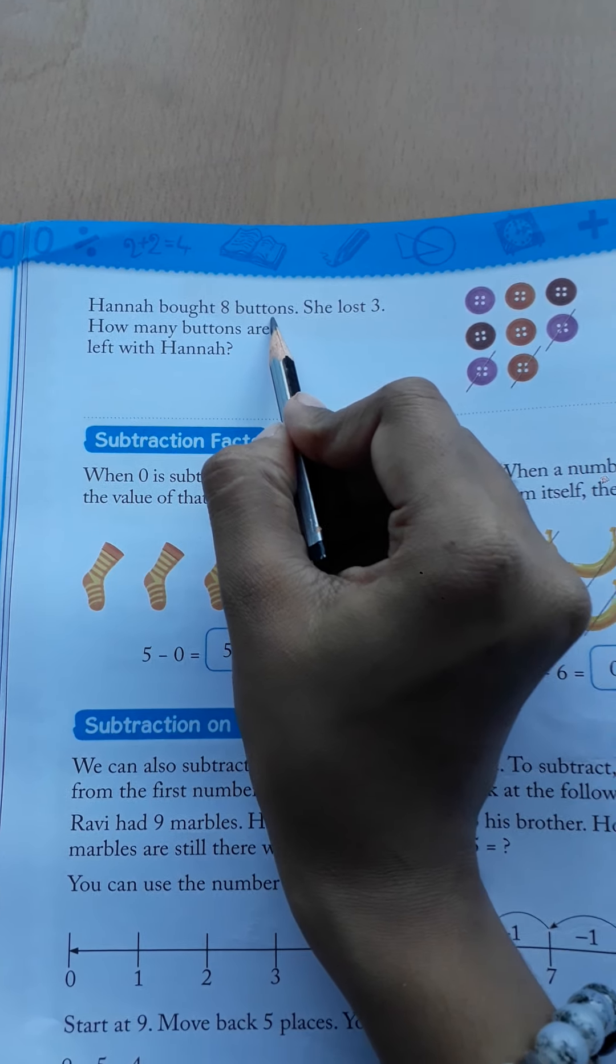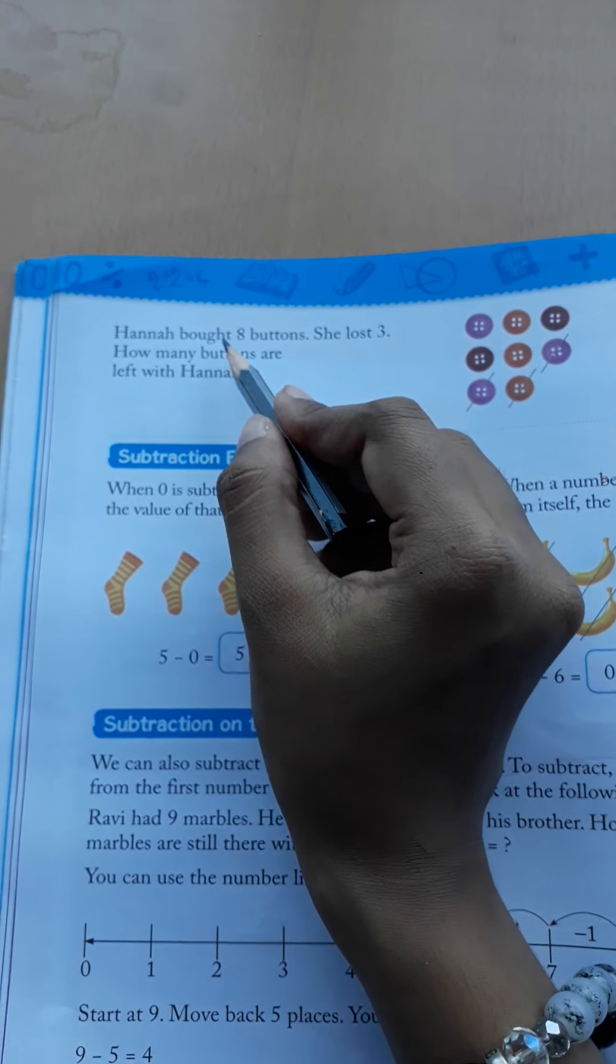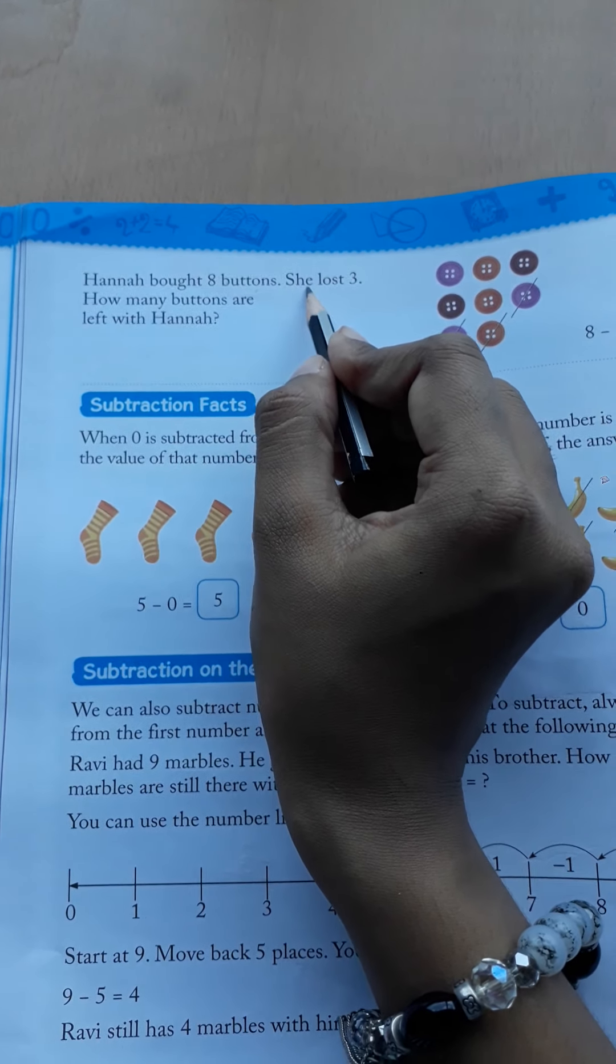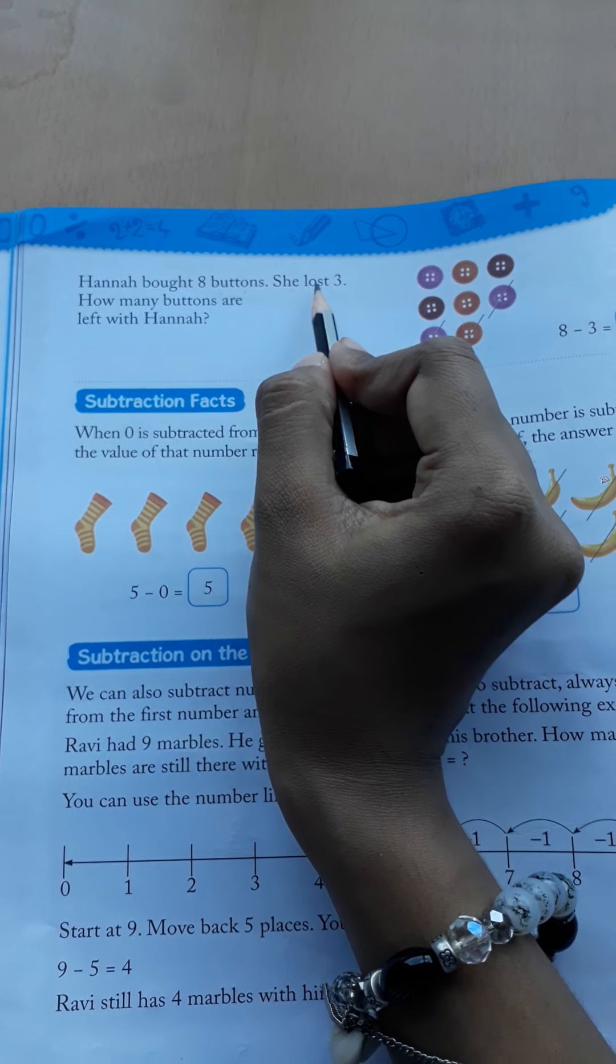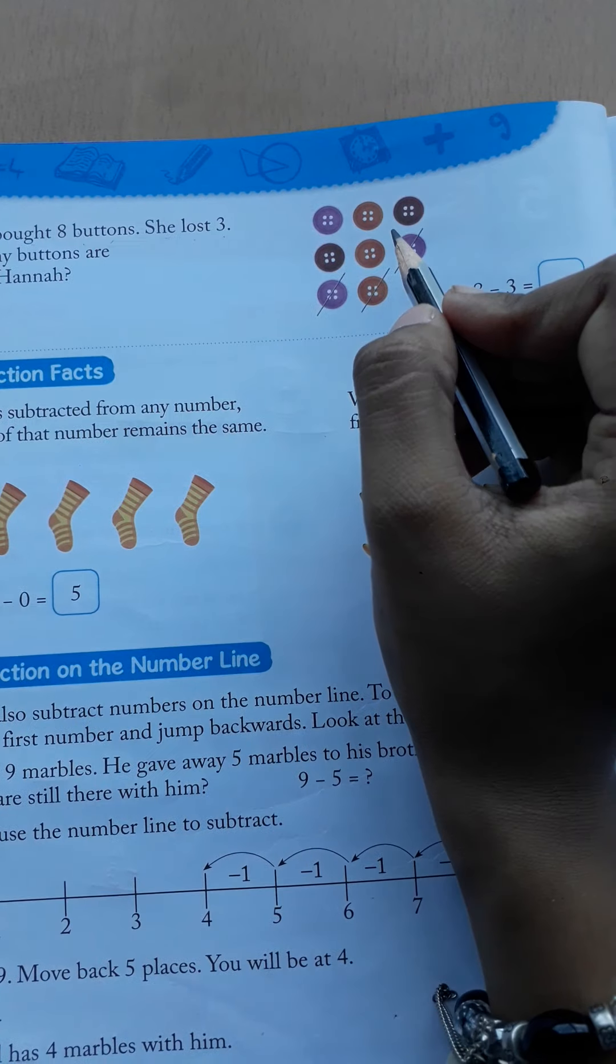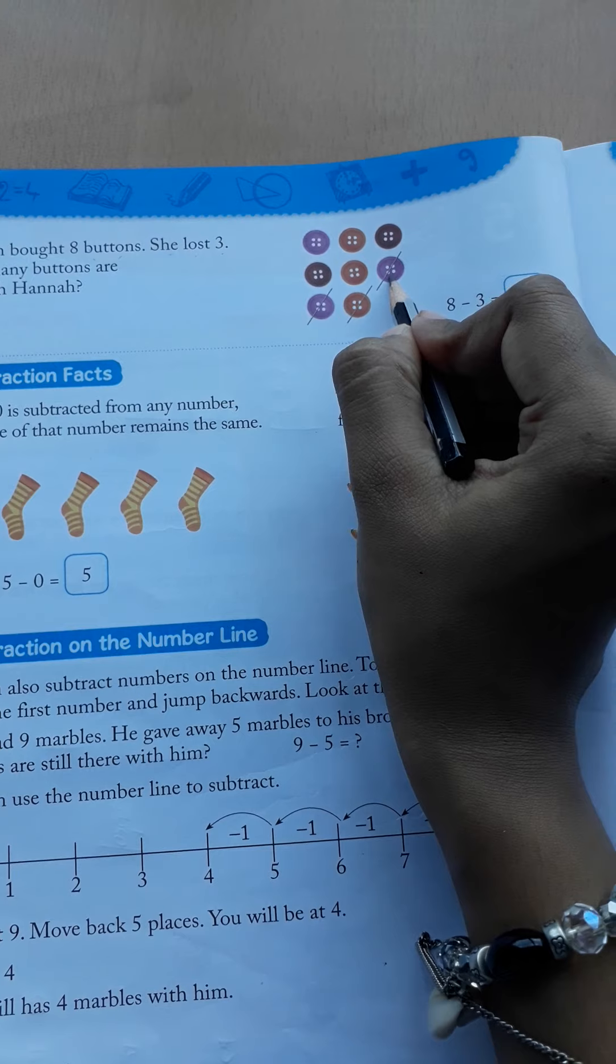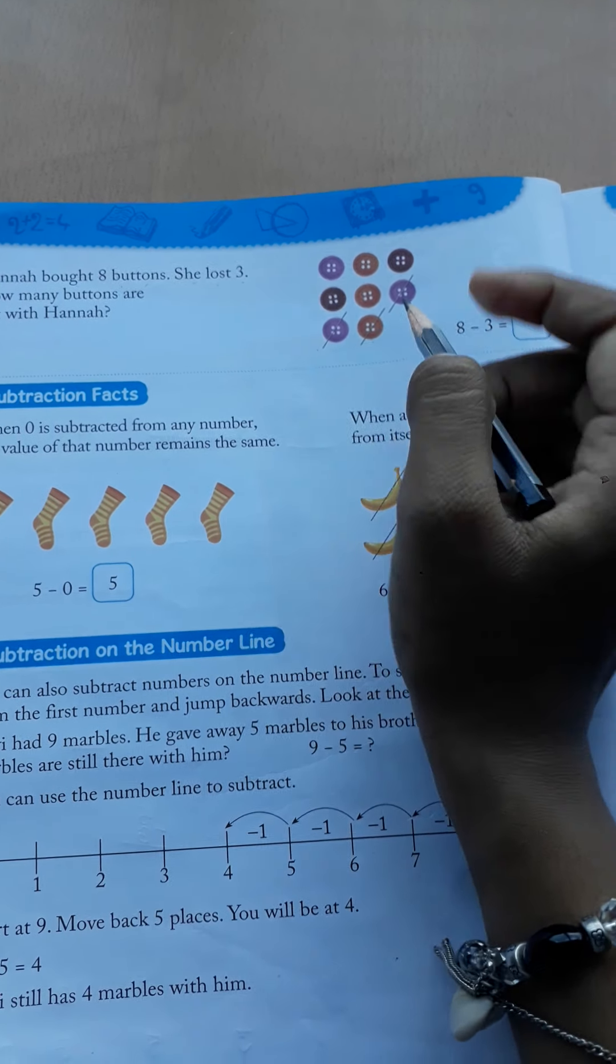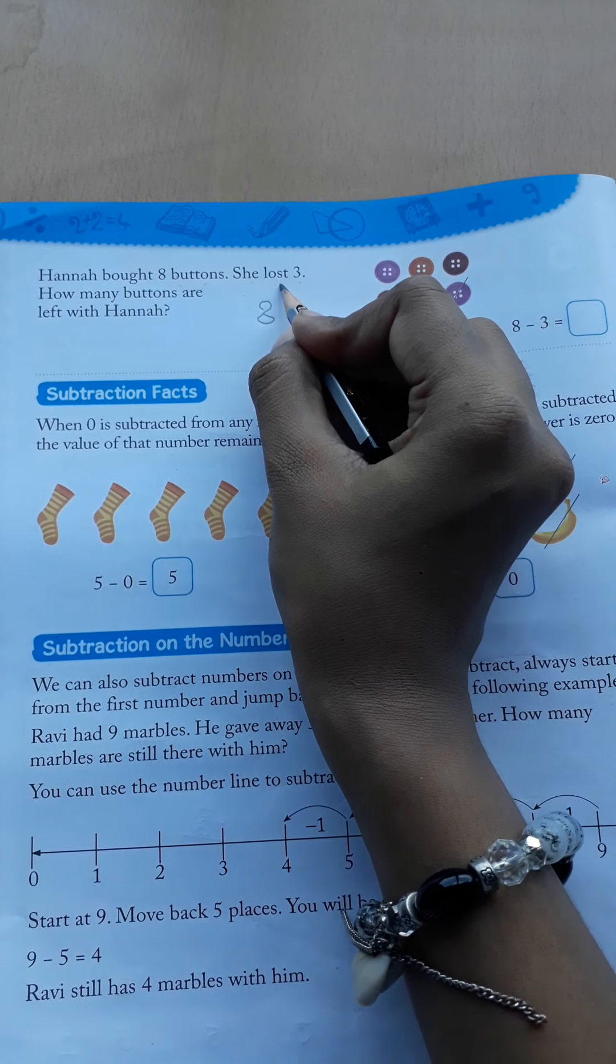Hannah bought 8 buttons. Hannah is a girl. So Hannah bought 8 buttons, she lost 3. First of all we will count the buttons. See, 1, 2, 3, 4, 5, 6, 7, 8. We have how many buttons? We have 8 buttons. She lost 3. Lost means kya hota bachcha? Kho jana. So she lost 3.